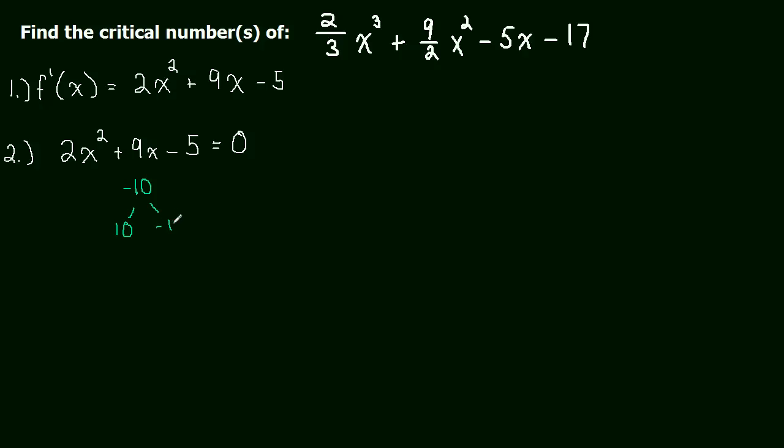So 10 and negative 1. When you multiply them, you get negative 10. When you add them, you get positive 9. And now we're going to do our grouping method.